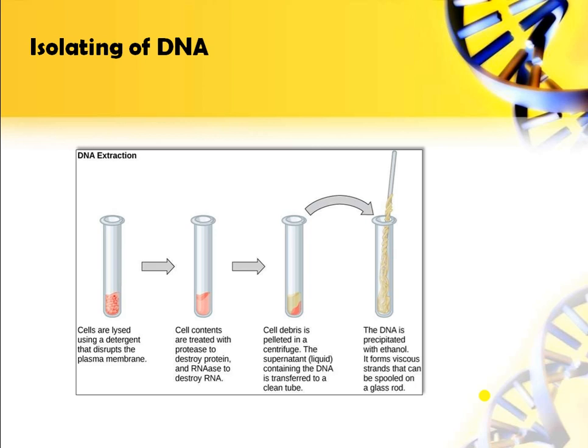The first step is isolation of DNA. To isolate DNA from a cell, the cells are lysed using a detergent that disrupts the plasma membrane, breaking it down. Then cell contents are treated with protease to destroy protein, and RNase to destroy RNA. Cell debris is pelleted in a centrifuge, and the supernatant containing DNA is transferred to a clean tube.